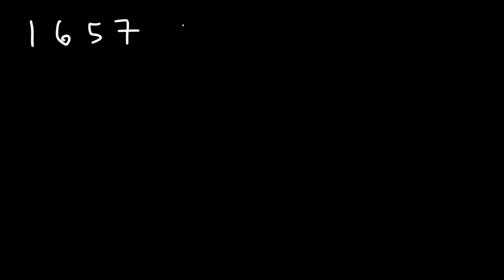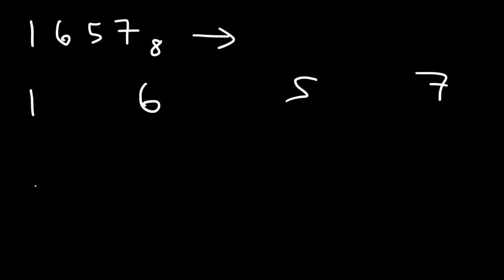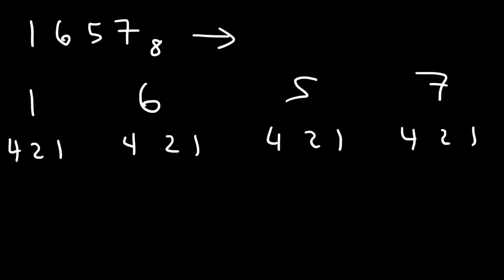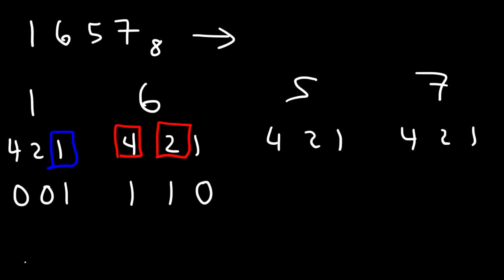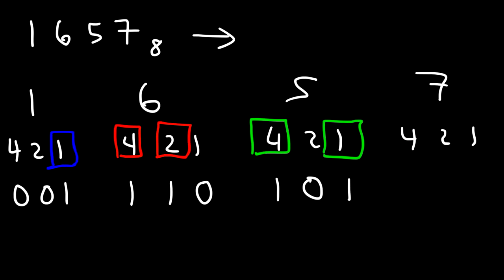Now let's try another example with a bigger number: 1657 in the octal system. Go ahead and convert it to a hexadecimal number. Let's separate the four digits: 1, 6, 5, 7, and break each up into 4, 2, 1 to convert to binary. For 1, this is just 0, 0, 1. For 6, which is the sum of 4 and 2, replace 4 and 2 with 1, giving 1, 1, 0. For 5, the sum of 4 and 1, replace 4 and 1 with 1 and the 2 with 0: 1, 0, 1. And 7 is the sum of all three — 4 plus 2 plus 1 — so replace each with 1: 1, 1, 1.